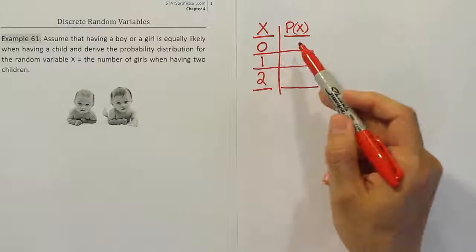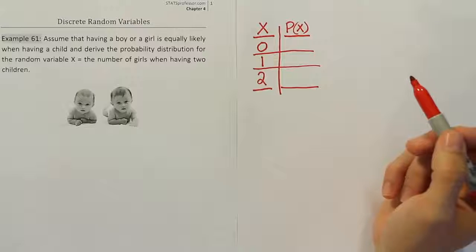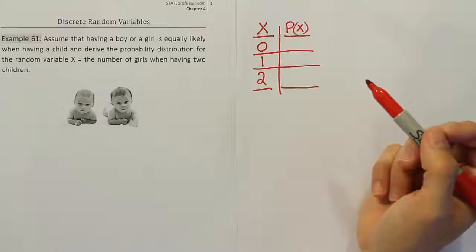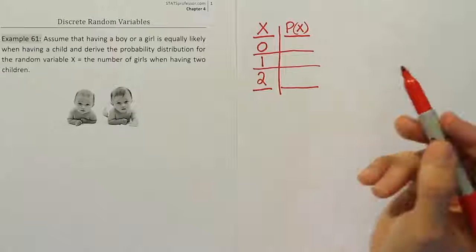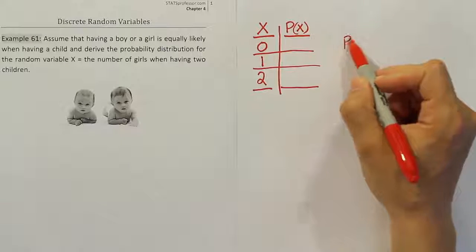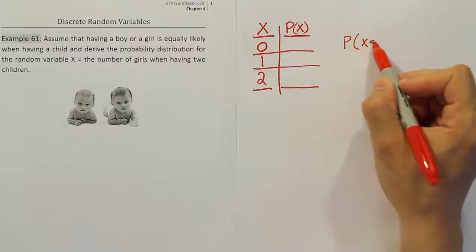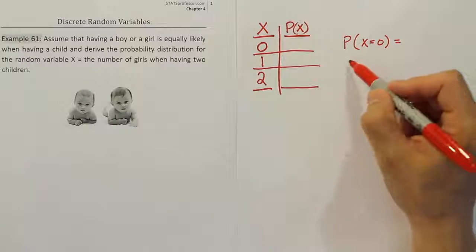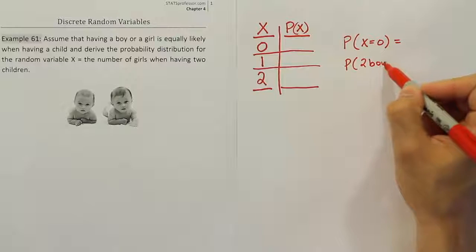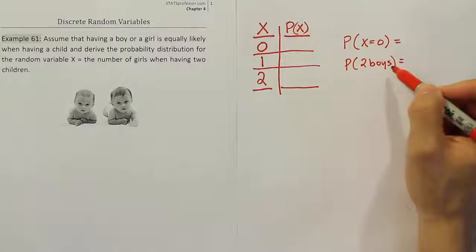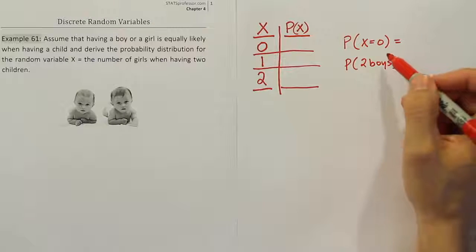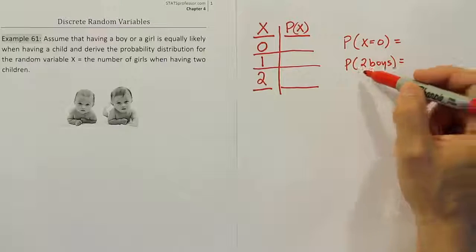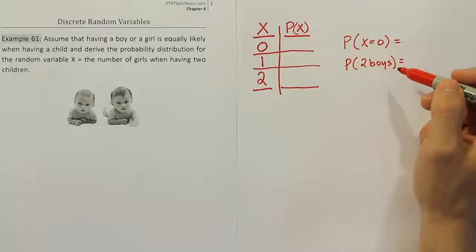Let's talk about how to get the probability that there are no girls out of two births. It's helpful they told us that the probability of boys and girls will be assumed to be equally likely. We're looking for the probability that we end up having X equals zero, where X equals zero means the probability of having two boys. Or you could say no girls, but that's the same thing. If there are no girls, there must be two boys.